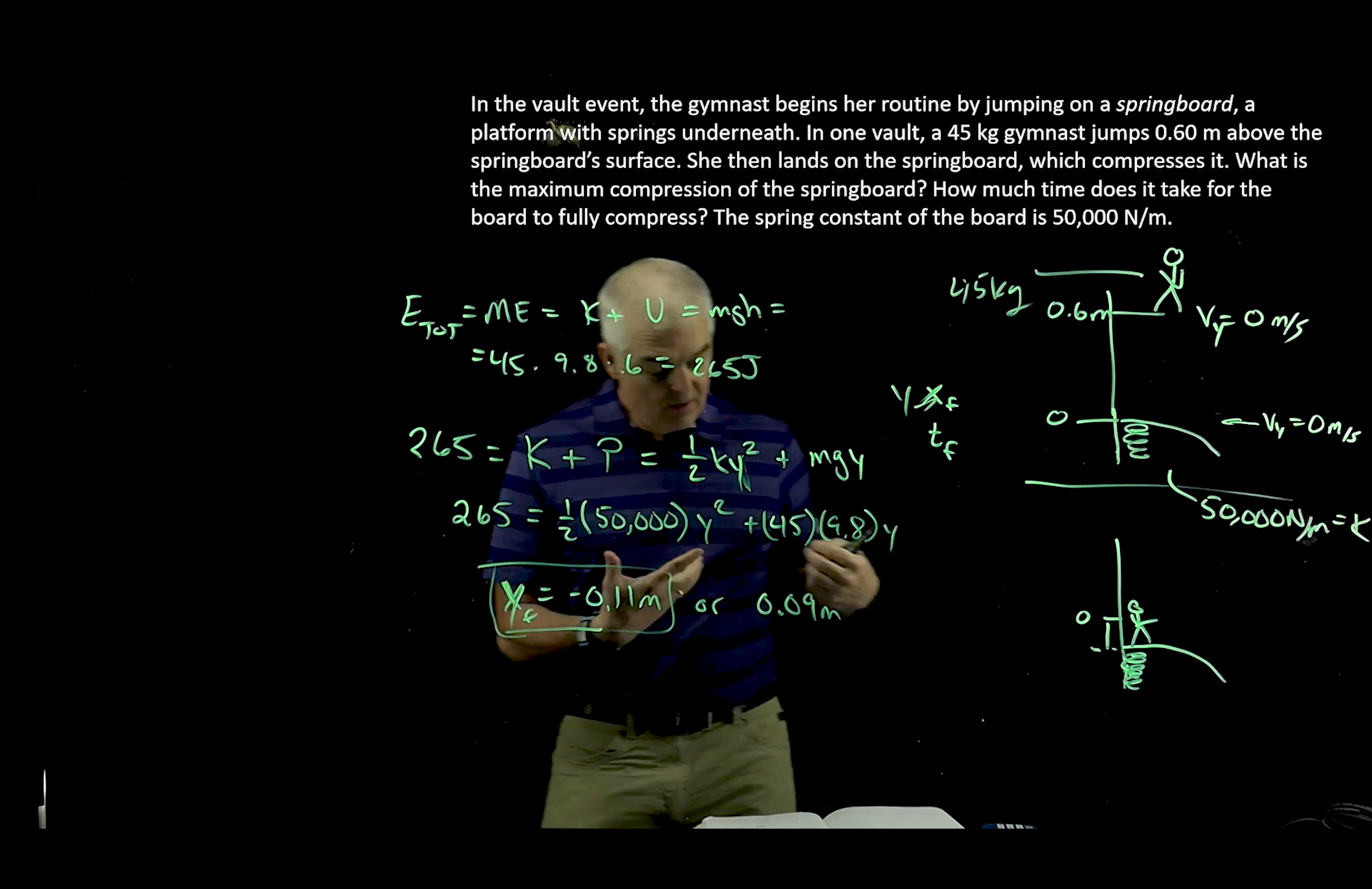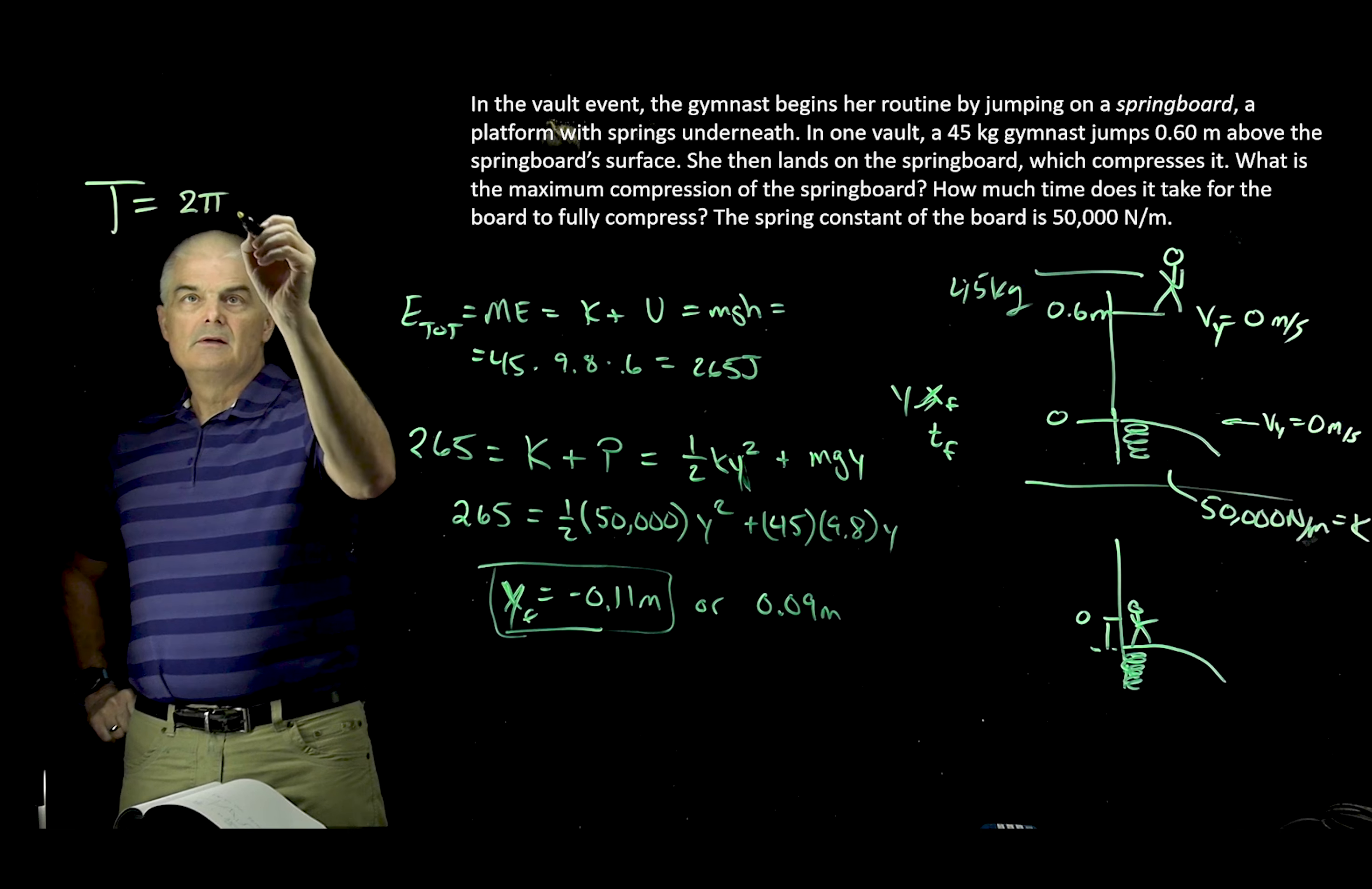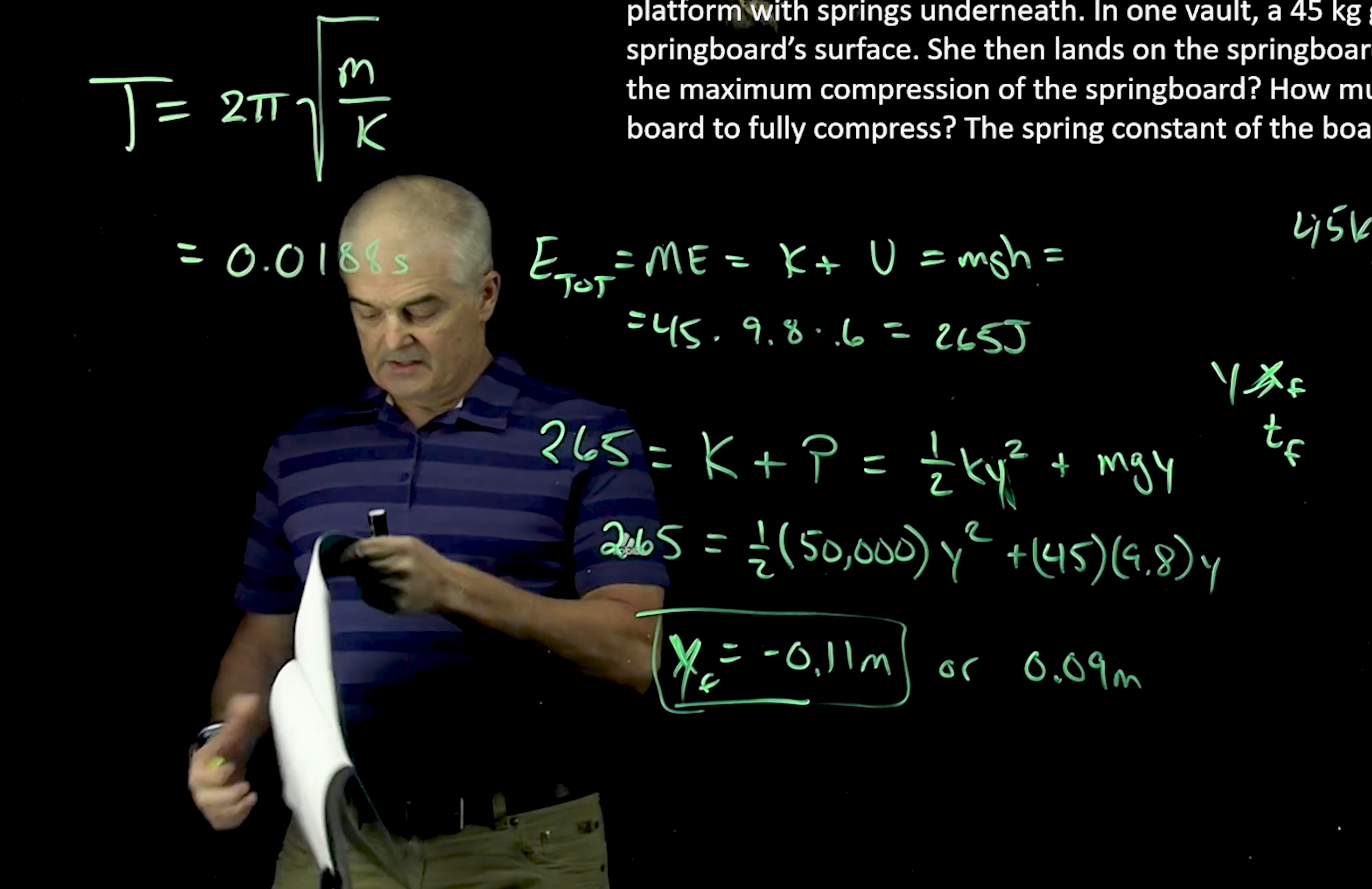But the second part of the question, we need to answer the question: what is the time? How long is it going to take to compress this spring? Well, remember, it follows simple harmonic motion. It's a spring. So if you think I'm trying to solve for time, I'm going to use the equation that's t equals 2 pi square root of m over k. I know m, I know k, I know 2 pi. So the mass is 45, the k is 50,000. And I get, now this is the period. I get 0.0188 seconds. But that's still not the answer.